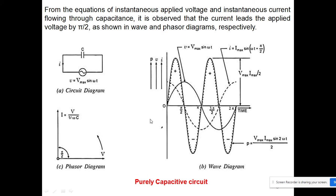I will again explain this diagram and we will talk about the power also. You can see here: only the voltage is lagging behind the current by π/2, or we can say the current is leading ahead of the voltage by π/2.